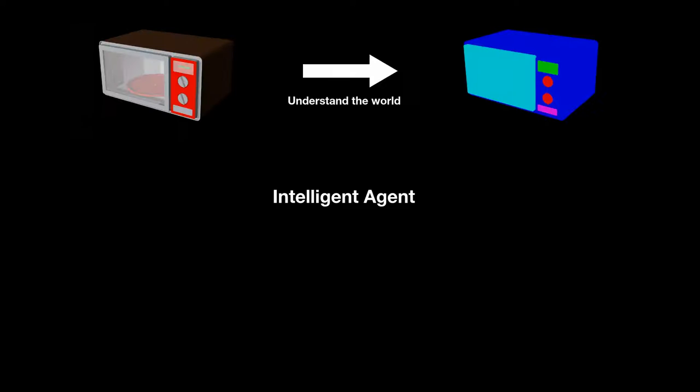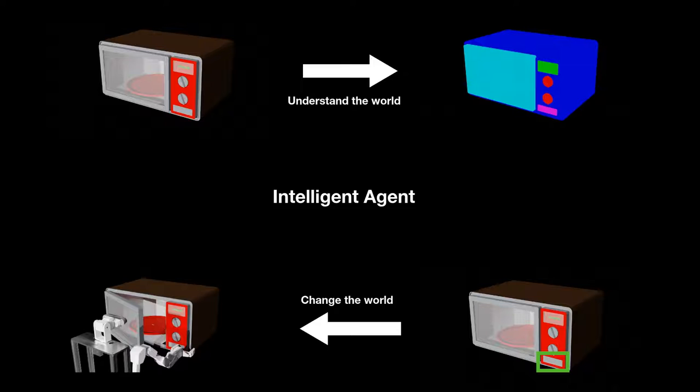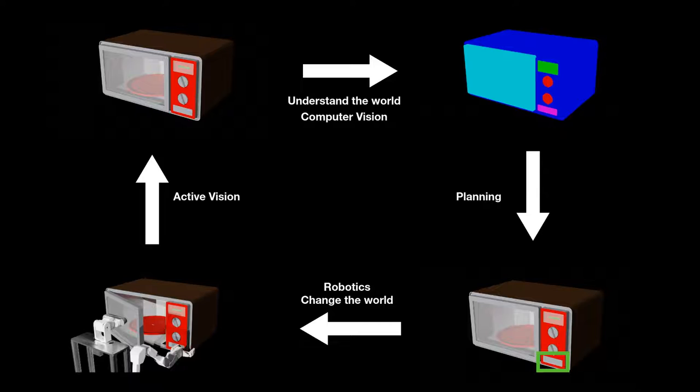Let's start by thinking about an intelligent agent we want to build. It needs to understand the world, and then change the world based on its understanding. We have studied world understanding in computer vision and object manipulation in robotics, and we envision that vision and manipulation will be tightly related and studied together. Vision can help planning and adjusting robotics tasks, while active interaction with the world can enhance vision.